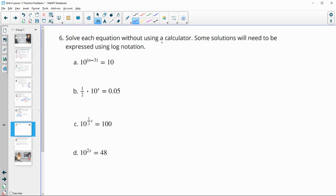Number 6, solve each equation without using a calculator. Some solutions will need the expression to be used in log notation if you can't simplify without a calculator. So in this one, we have two base 10 equations. This is really 10 to the first. So we know that the exponent n minus 3 would equal this exponent of 1. So then we can just add 3 to both sides and we would get n equals 4. Because 4 minus 3 is 1, 10 to the first is the same as 10 to the first.